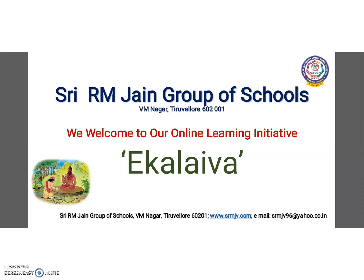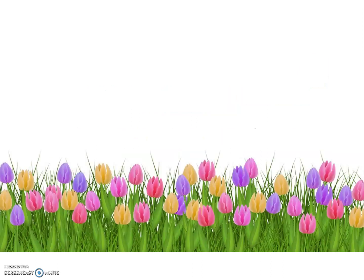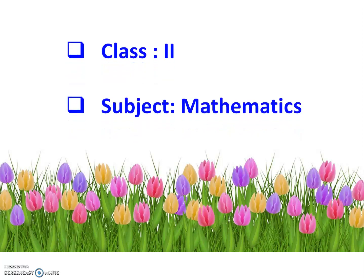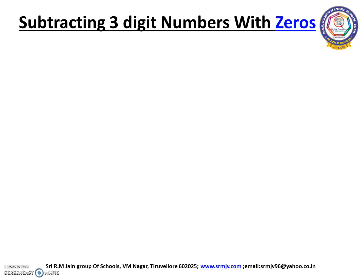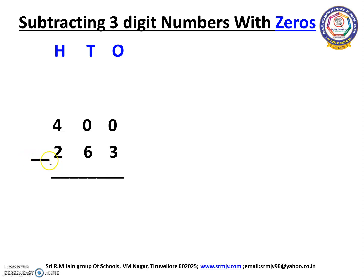Welcome to today's online mathematics class children. In our previous class we saw 3-digit subtraction with regrouping of 10s and 100s. In today's class we are going to see subtracting 3-digit numbers with 0. This is the sum we are going to work out today. Before we start doing the sum we have to check the symbols. Here we have a subtraction symbol, so we are going to subtract 263 from 400.